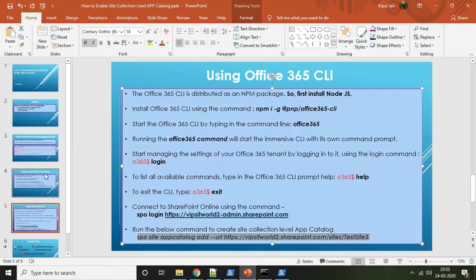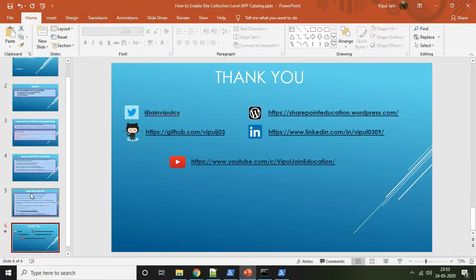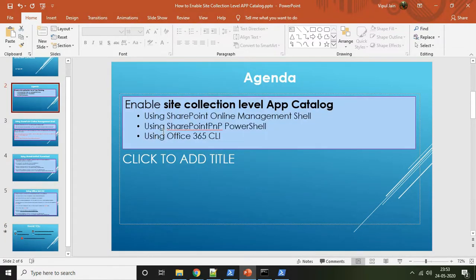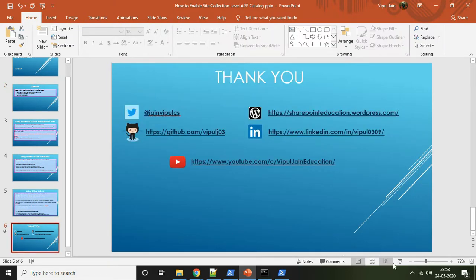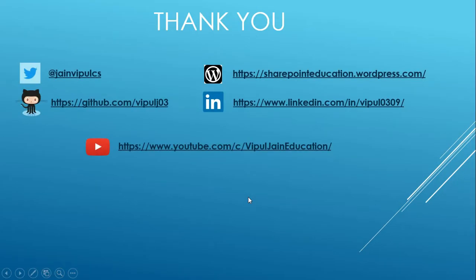In this video we have seen three methods to enable site collection level app catalog — using SharePoint Online Management Shell, SharePoint PNP PowerShell Online, and Office 365 CLI. I hope this video helps you get started with these tools. Thank you very much, please stay safe and be happy.